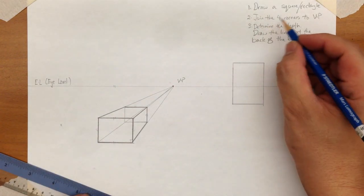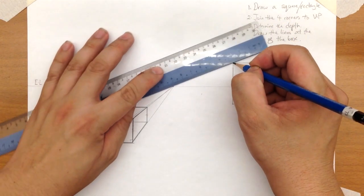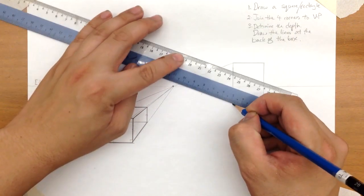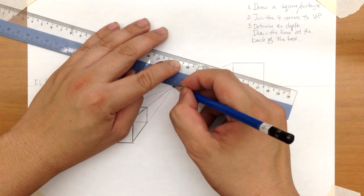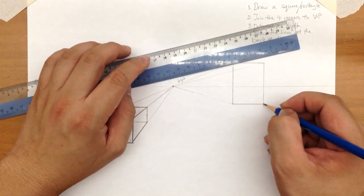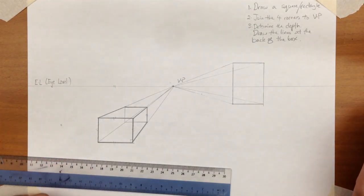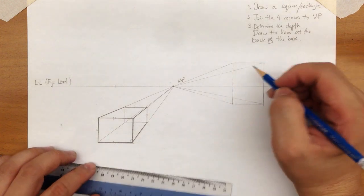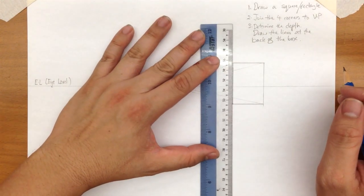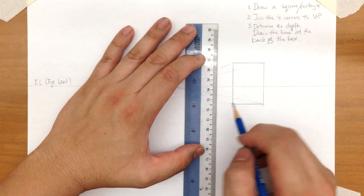Step 2. Step 2. Join the 4 corners to the vanishing point. Step 3. Determine the depth of the box. So I'm going to move my ruler again from here. Move it down. Okay. You can see this is the front. This will be the side. The left-hand side of the box.